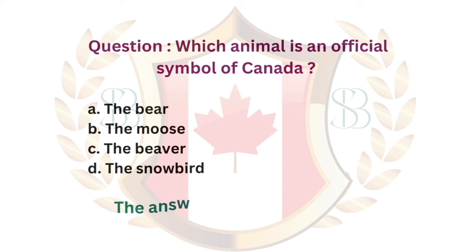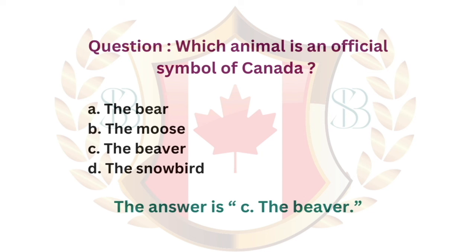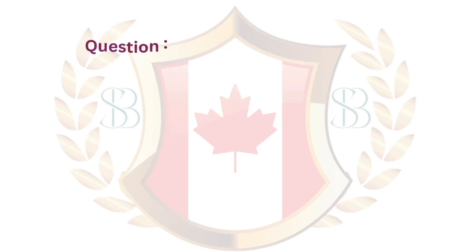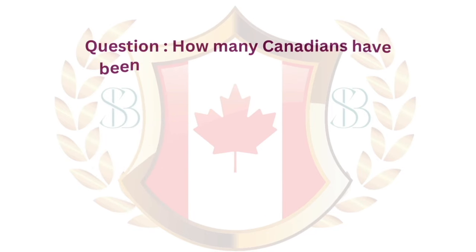Question. Which animal is an official symbol of Canada? a. The bear. b. The moose. c. The beaver. d. The snowbird. The answer is c. The beaver.